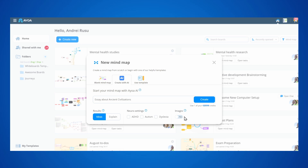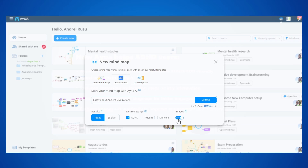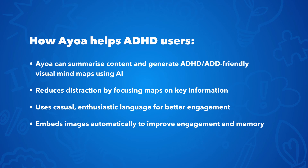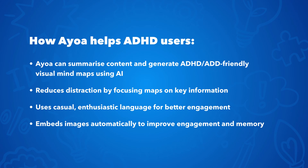I'm working on an essay about Asian civilizations, and we'll get to see AI generate maps with each of the neural settings. First, let's see how AOS can help ADHD users. AOS can summarize content and generate ADHD or ADD-friendly visual mindmaps using AI. It reduces distraction by focusing maps on key information, uses casual and enthusiastic language for better engagement, and embeds images automatically to improve engagement and memory.